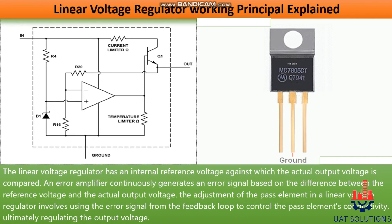The linear voltage regulator has an internal reference voltage against which the actual output voltage is compared. An error amplifier continuously generates an error signal based on the difference between the reference voltage and the actual output voltage.